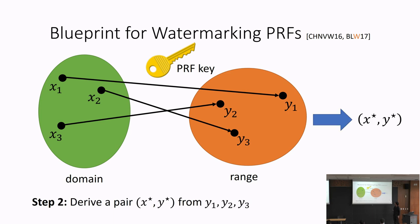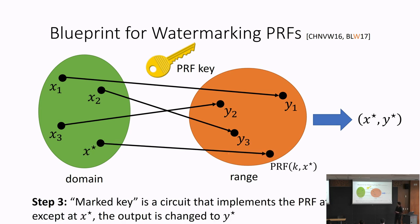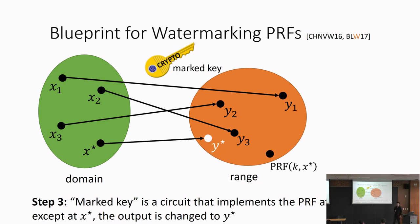From y1, y2, y3, we derive a special point x* and y* in a pseudorandom way. The marked key is a circuit that implements the original PRF perfectly, except at the single special point x* where we change the output to y*. So at x*, the circuit evaluates to y* instead of the real PRF value.